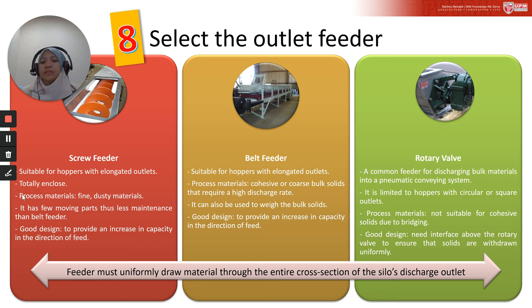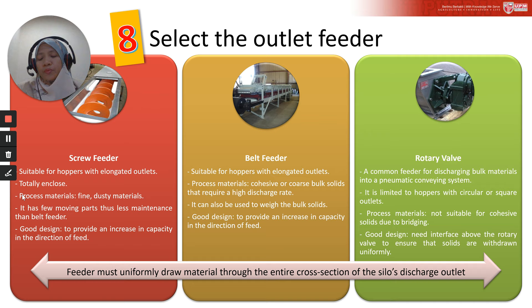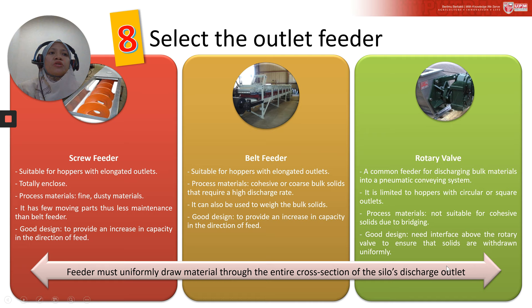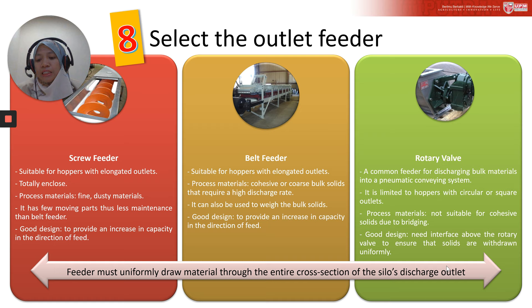Step 8 is to select the outlet feeder. The feeder is another important support equipment for the silo, which also affects the performance of flow from the silo. To be effective, feeders must uniformly draw material through the entire cross-section of the silo's discharge outlet. A poorly designed feeder or a partially open gate will result in funnel flow even if the hopper was designed for mass flow.